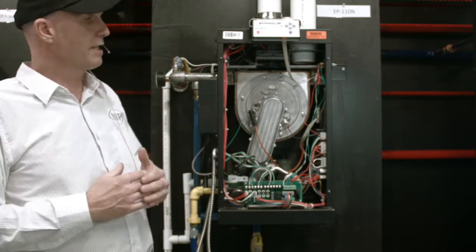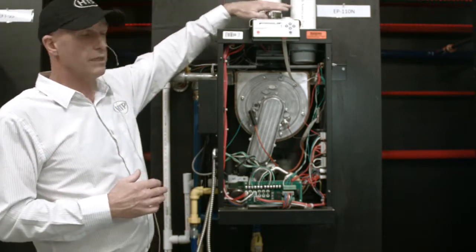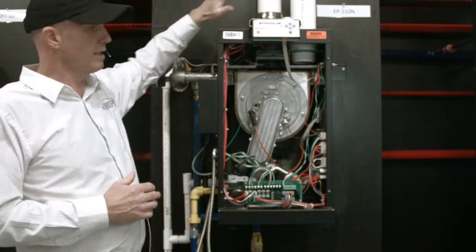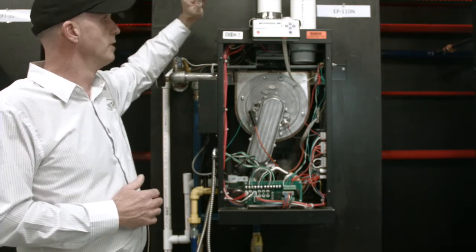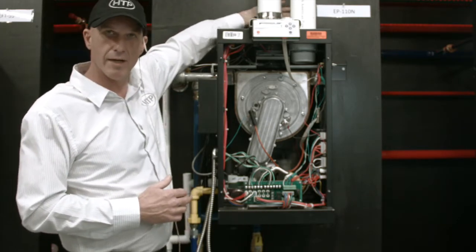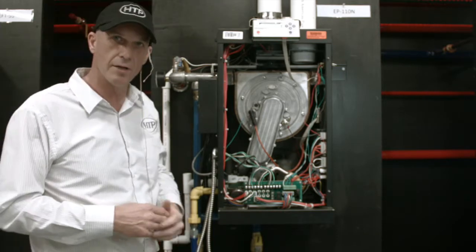So we'll take a look starting at the top. We have our intake and exhaust connections right up on the top here. It allows us to mount it on the wall if we need to. And then back here is an air vent to help get some of the air out of the heat exchanger when we initially fill it up.